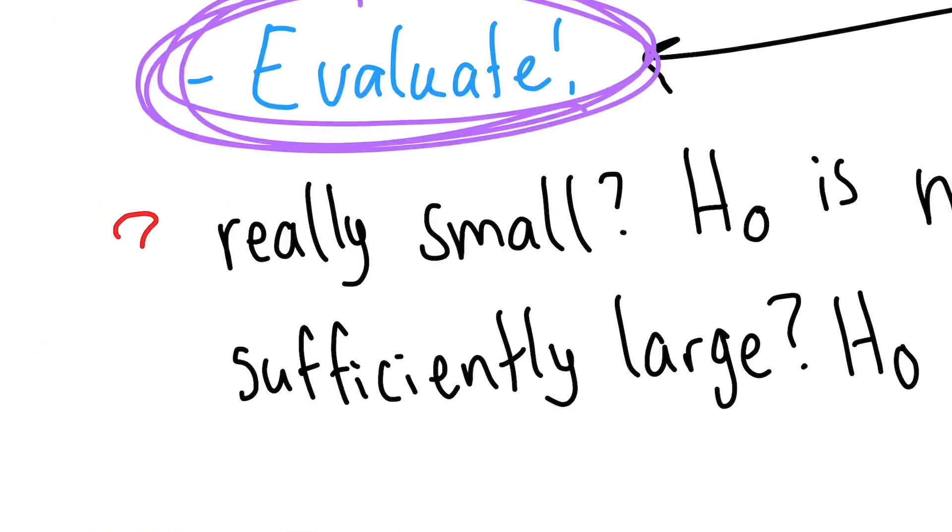But how unlikely is too unlikely? At what point do we decide, yeah, this isn't feasible, and reject our null hypothesis and our assumptions? Does there need to be a 20% chance of it happening, a 5% chance, a 1% chance?